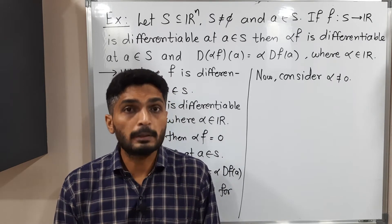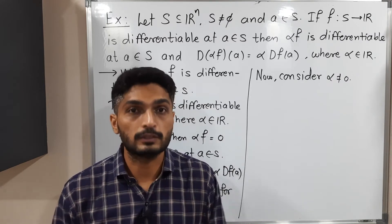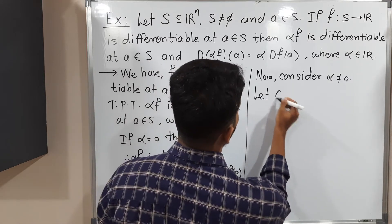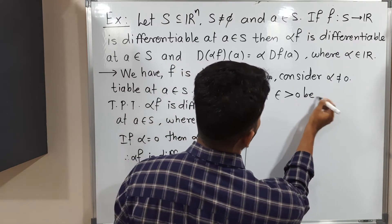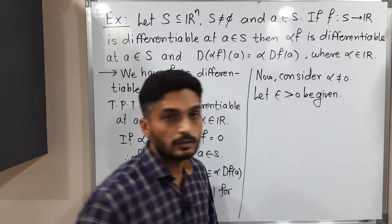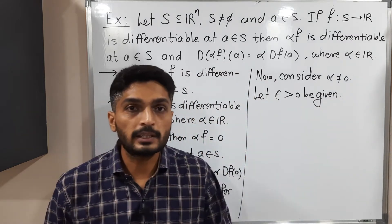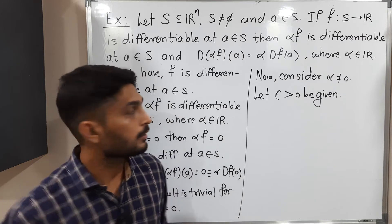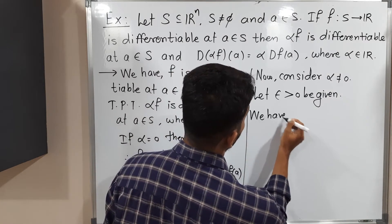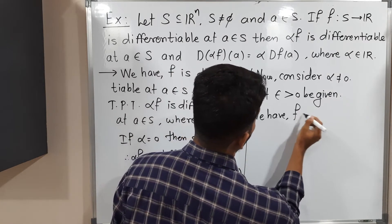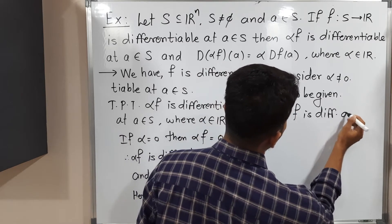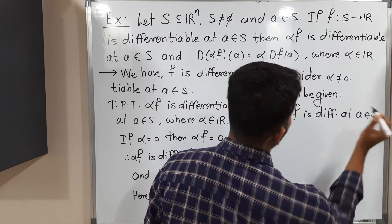For that purpose, let epsilon greater than zero be given. We start with the given information: we have F is differentiable at A belonging to S.